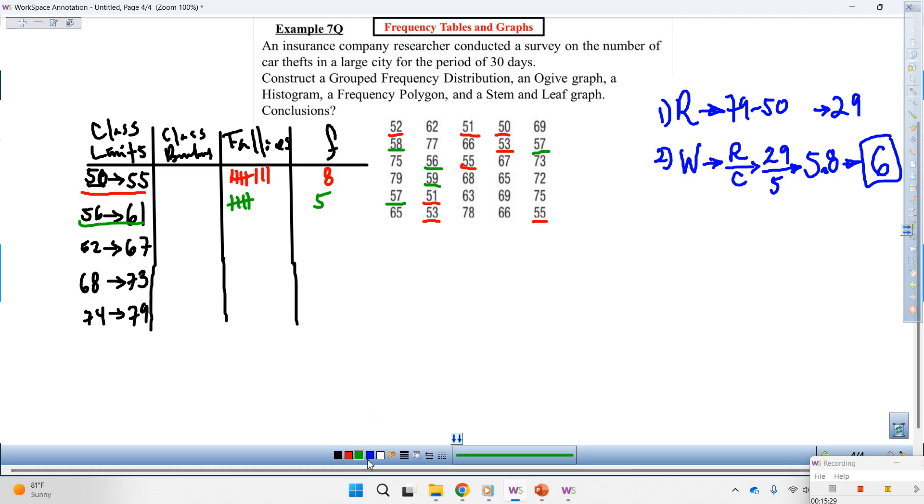Go to the next one. 62 to 67. We got, let's see. 1, 2, 3, 4, 5, 6, 7. So far so good, yeah? All right. I'll let you finish the last two.